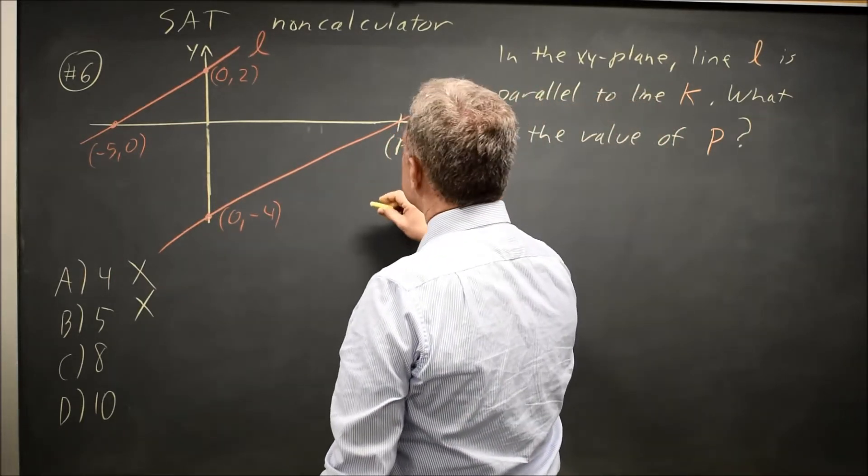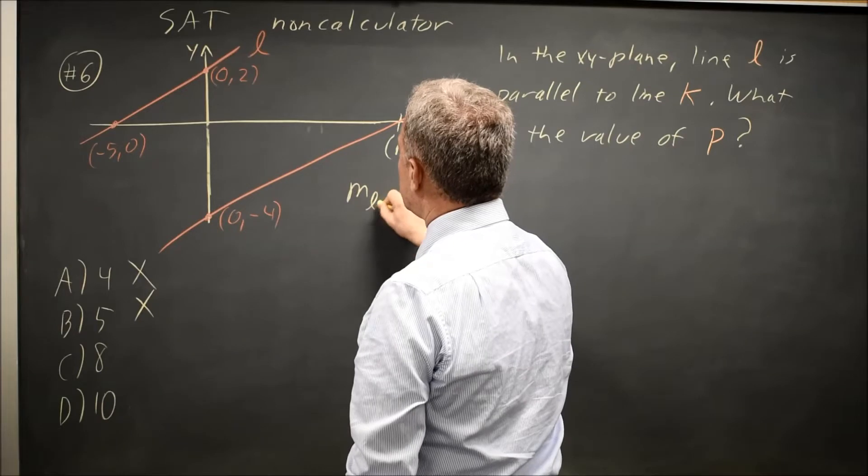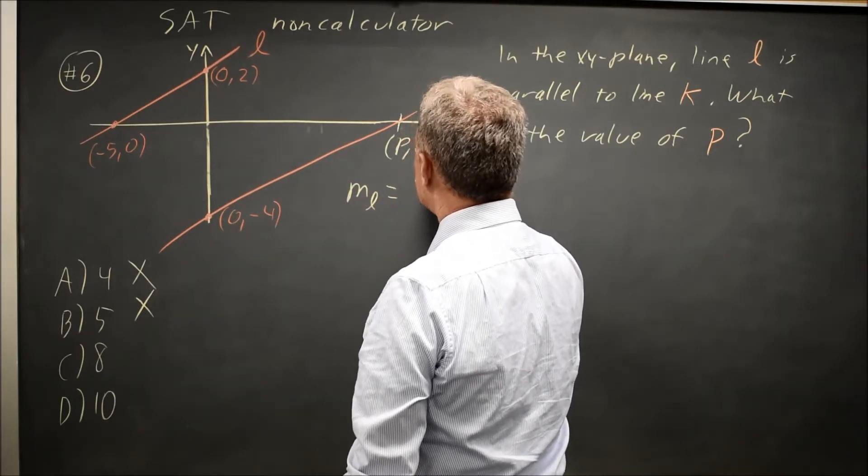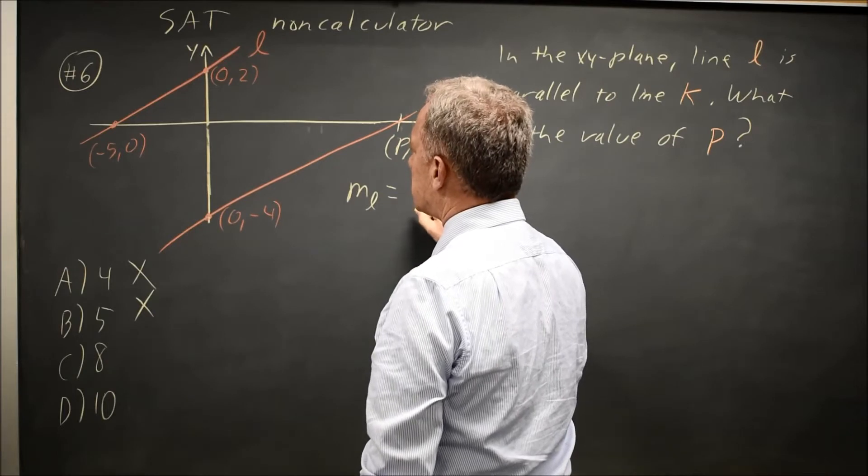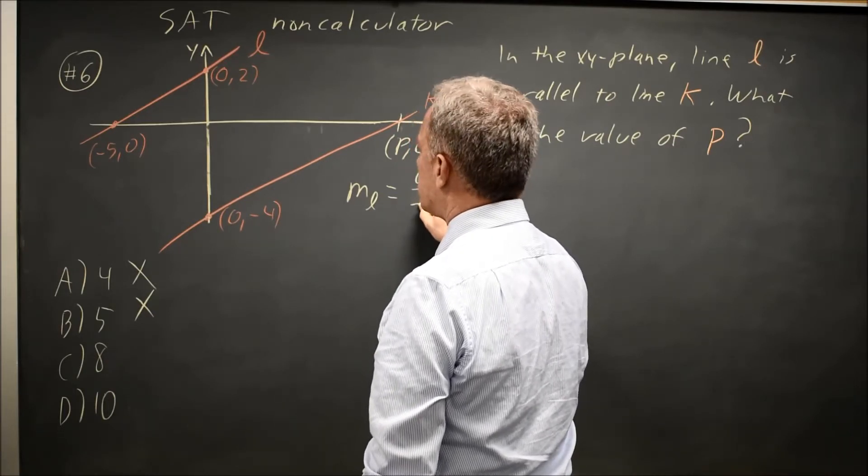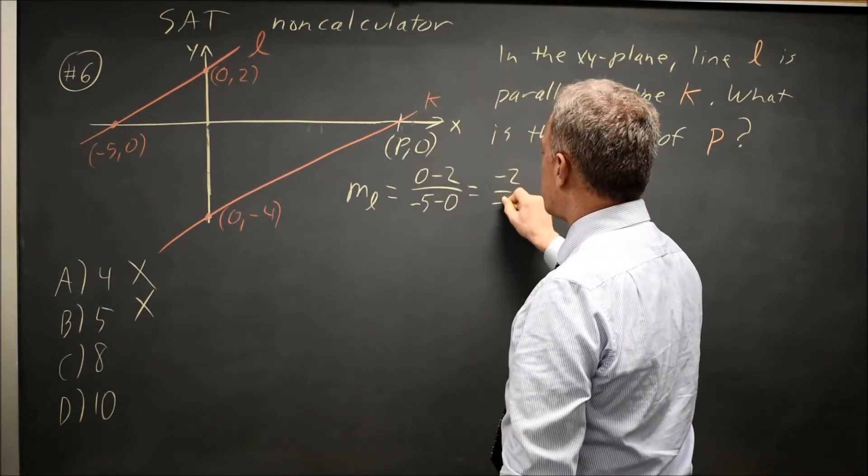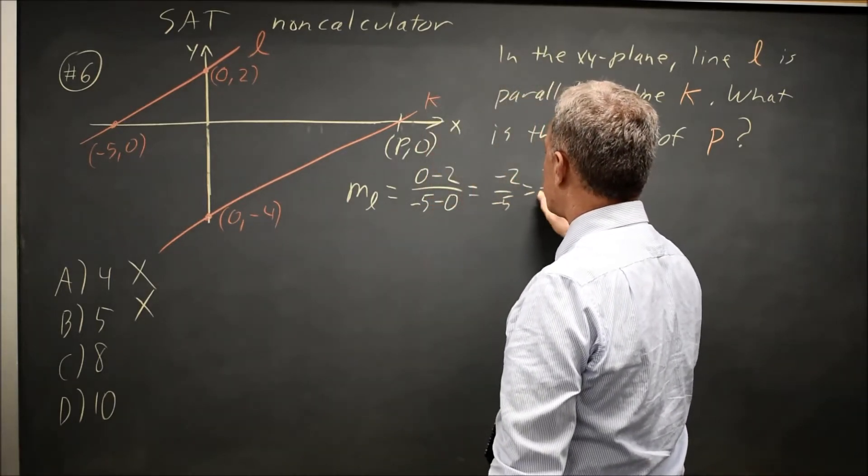Now let's find the slope of L. The slope for line L is y2 minus y1, which is 0 minus 2, over x2 minus x1, which is -5 minus 0. So that's -2 over -5 is 2 over 5.